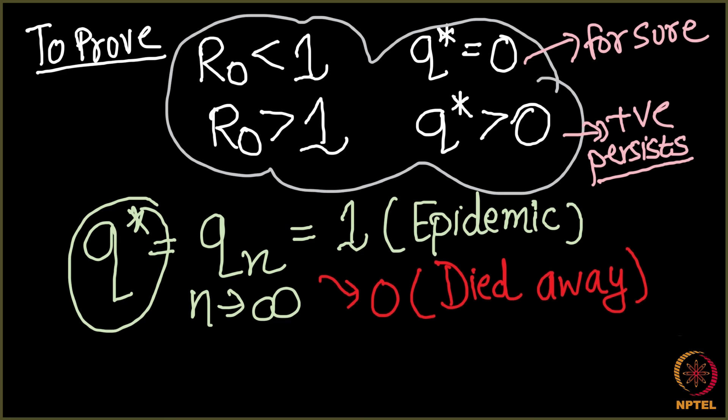We are going to do a proof which is a little bit lengthy, so at times you may want to look back and forth to see what is happening — though I will try my best to keep it as clear as I can. We will continue in the next lecture. Just look back and see how we have modelled this problem: what is q*, what is q_n, and so on.